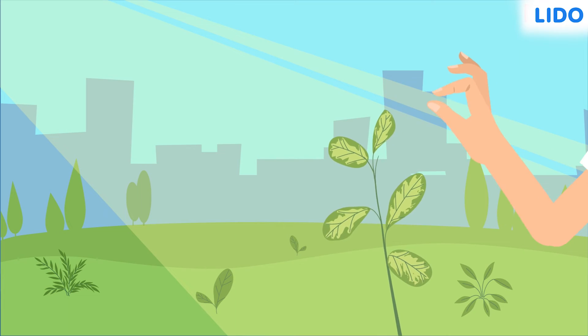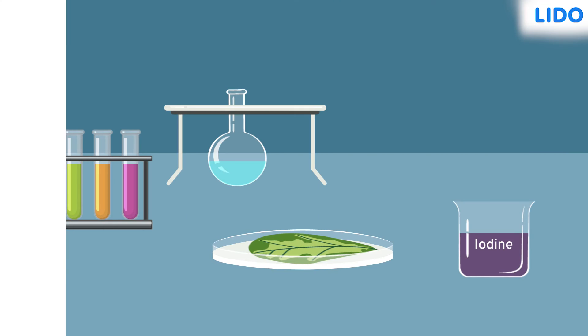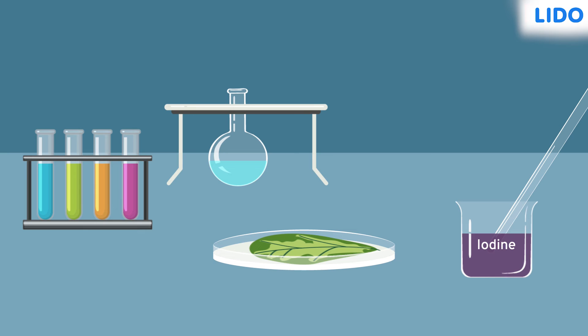Finally, Sapna plucked a variegated leaf from a plant under sunlight. She repeated the experiment, testing for starch.